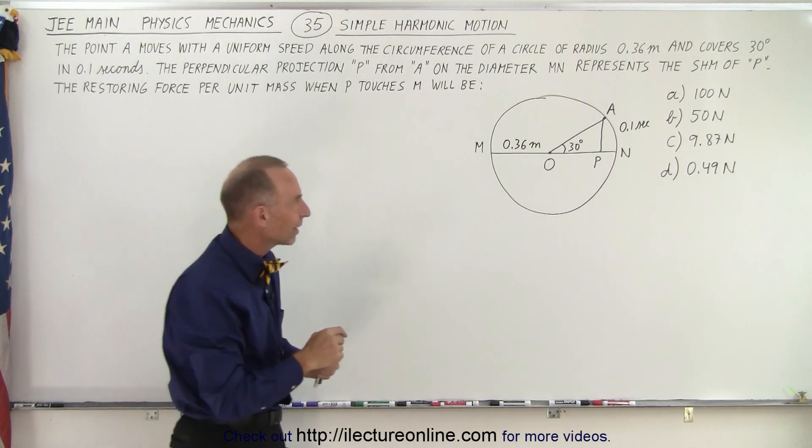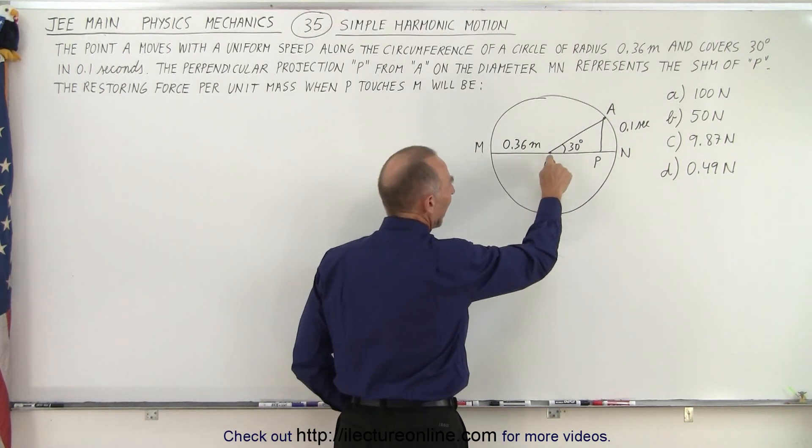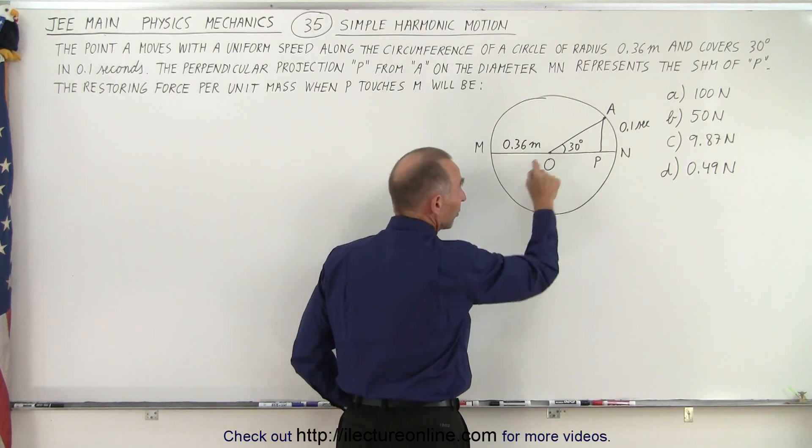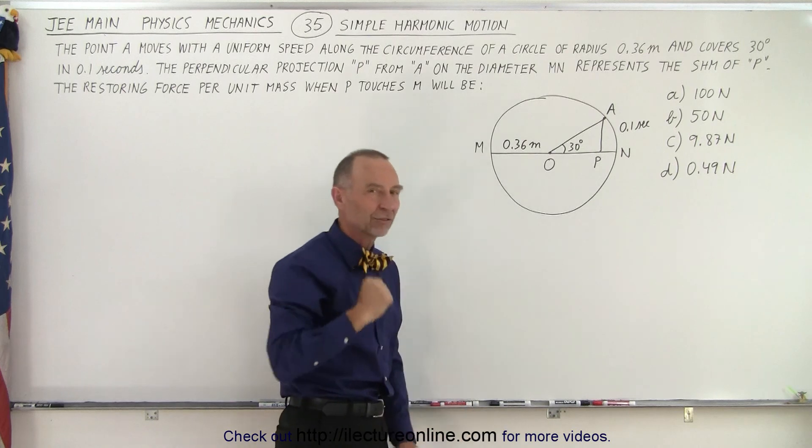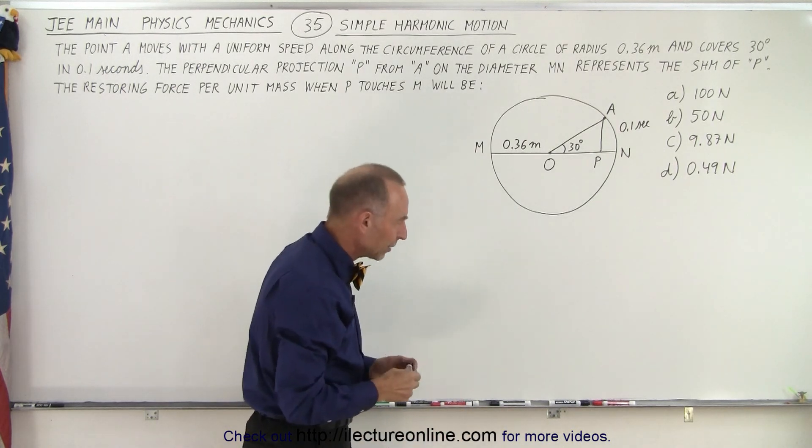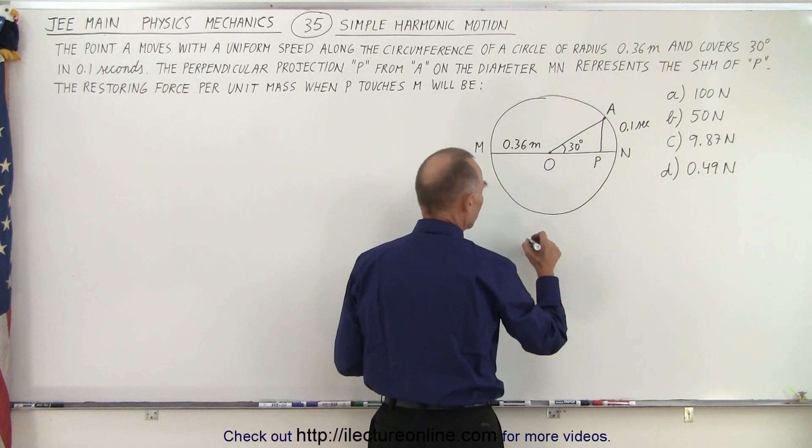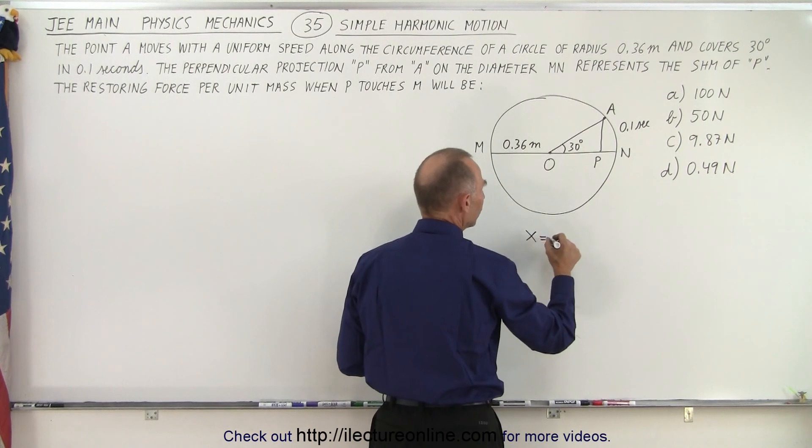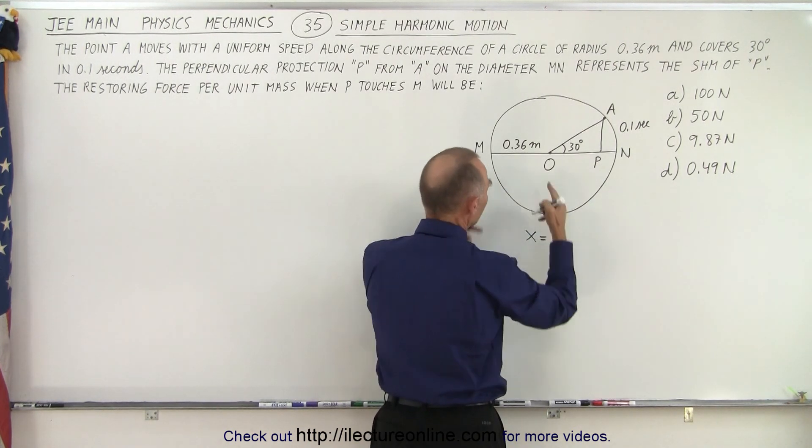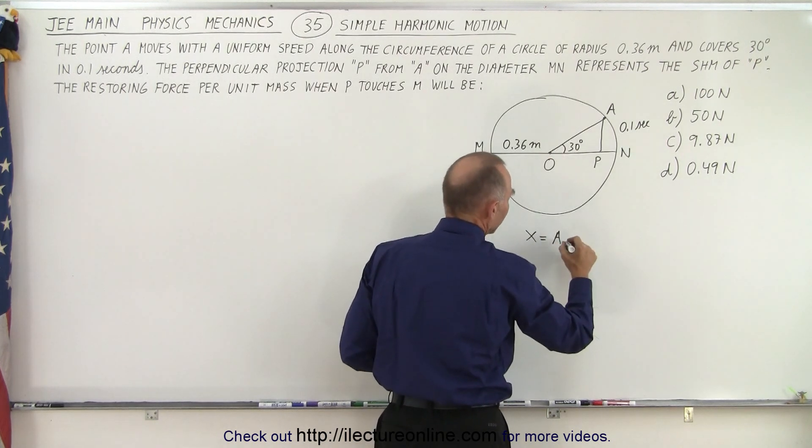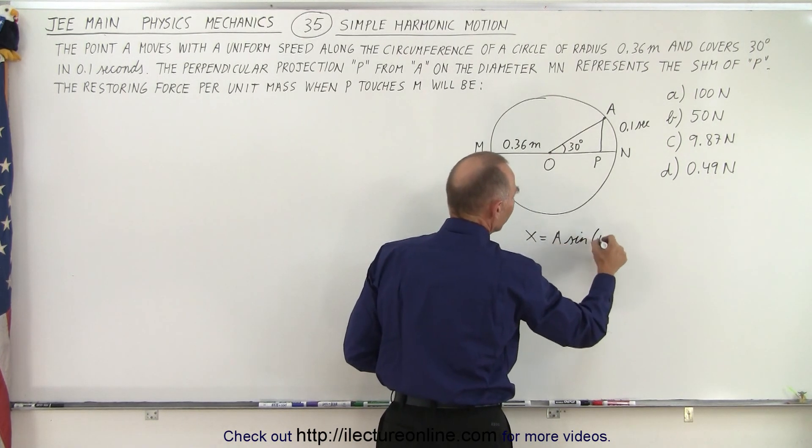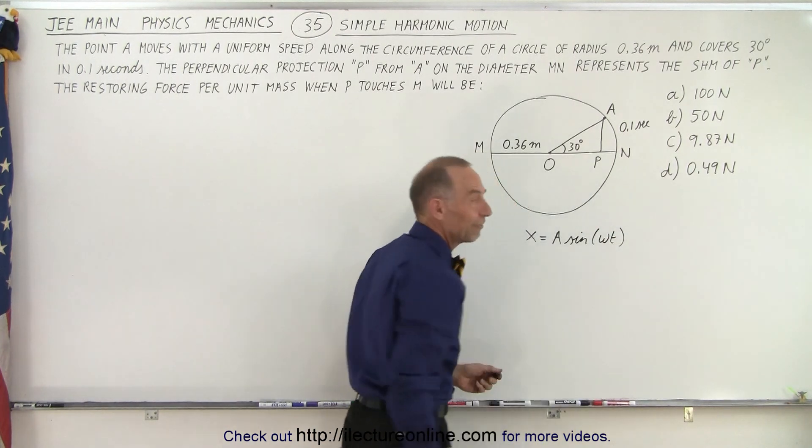Well, first of all, we realize that the restoring force at the equilibrium point will be zero. The restoring force at the end points will be a maximum. And then if we think about the position equation, we know that X is equal to A, A being the maximum amplitude, in this case that would be the radius of the circle, A times the sine or cosine, doesn't matter, we'll take the sine of Omega T, and let's say we don't have a phase angle.